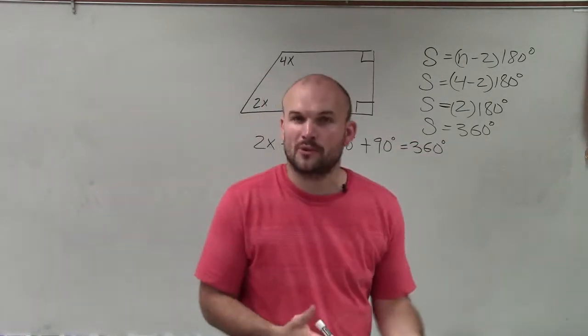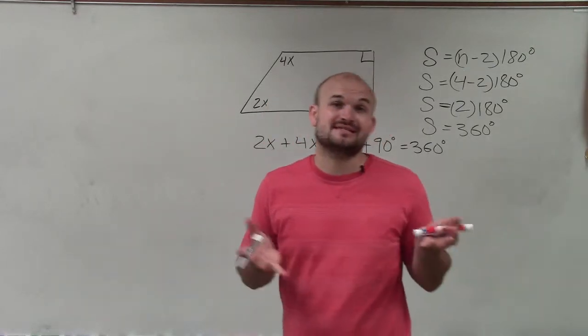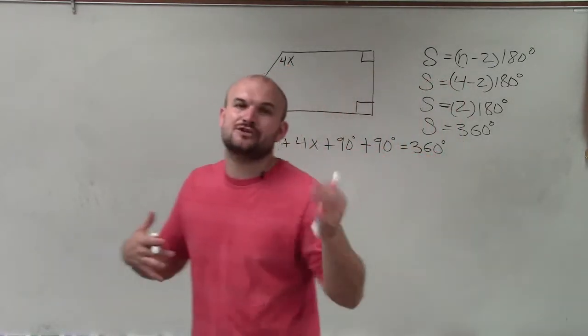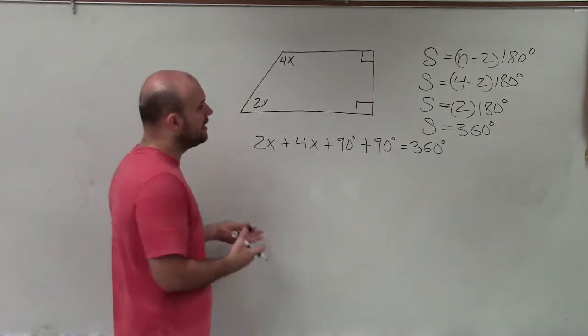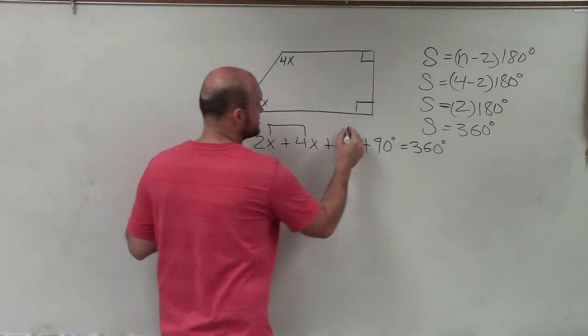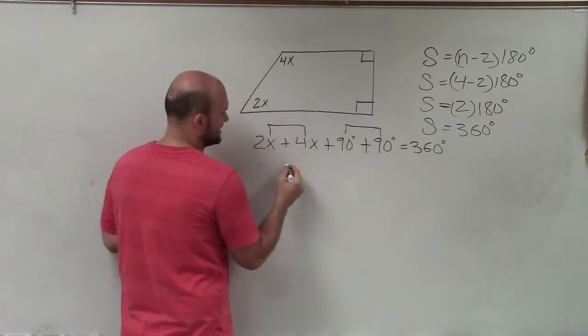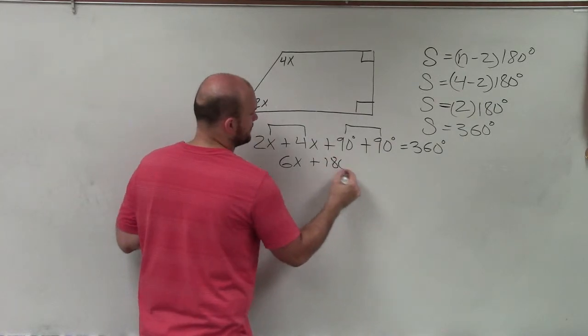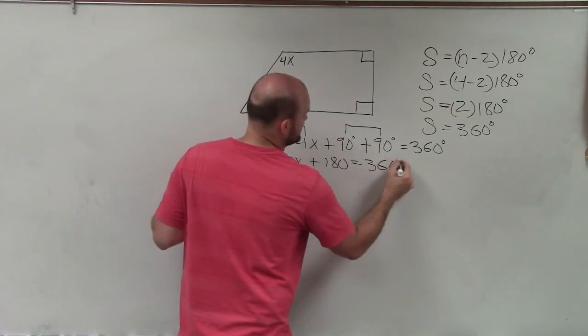And I know a lot of times it's kind of a little bit more work, but I can't tell you how many times I see mistakes from students, and it's basically them not wanting to put in that extra effort to write the equation. And that's really going to help you out because now I can combine like terms. So 2x plus 4x is 6x. 90 plus 90 is 180 equals 360 degrees.